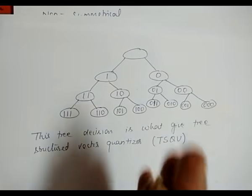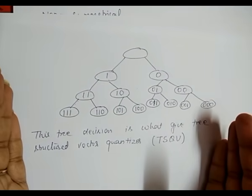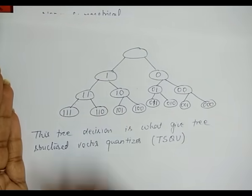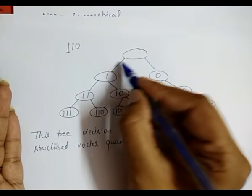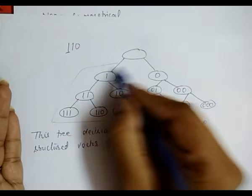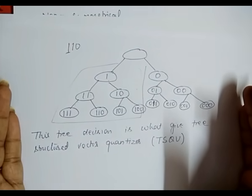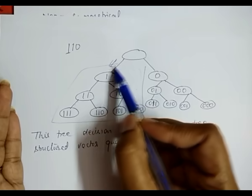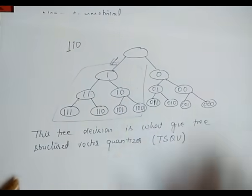By using this quantizer, we can reduce the number of comparisons. For example, if we are finding the closest value for test vector 1-1-0, we only compare within that group and discard all other values. We then pass the value to that side of the tree and compare to find the closest match, significantly reducing the number of comparisons required.